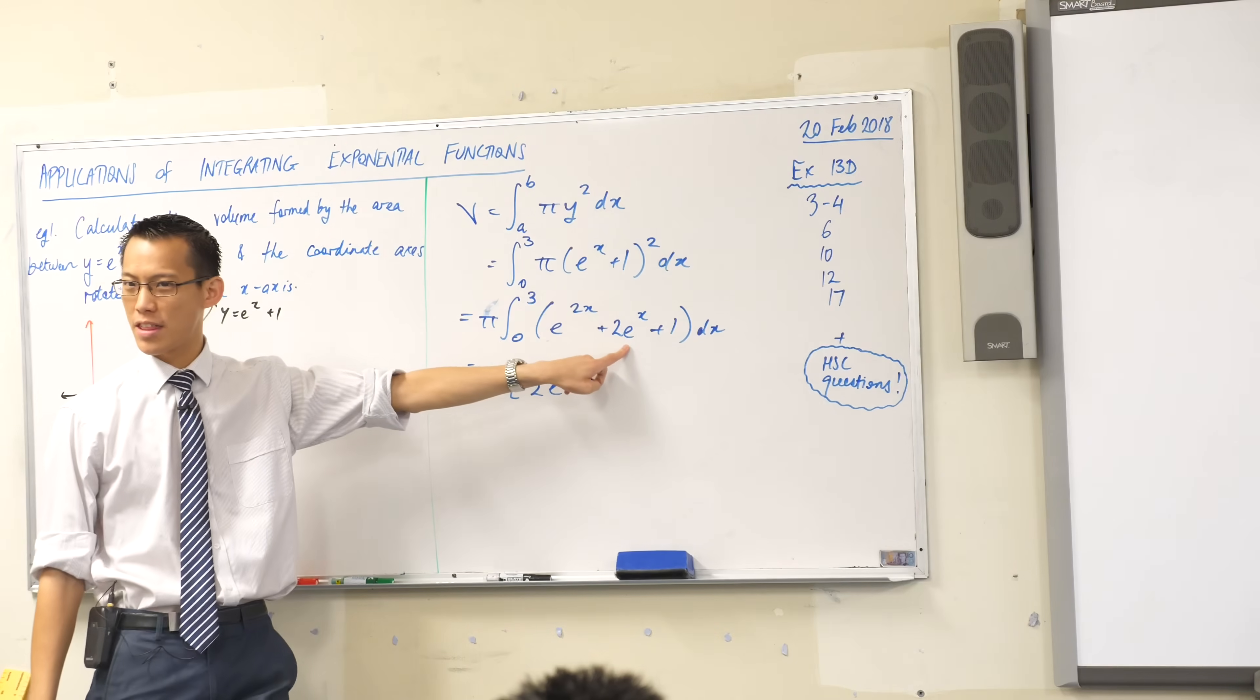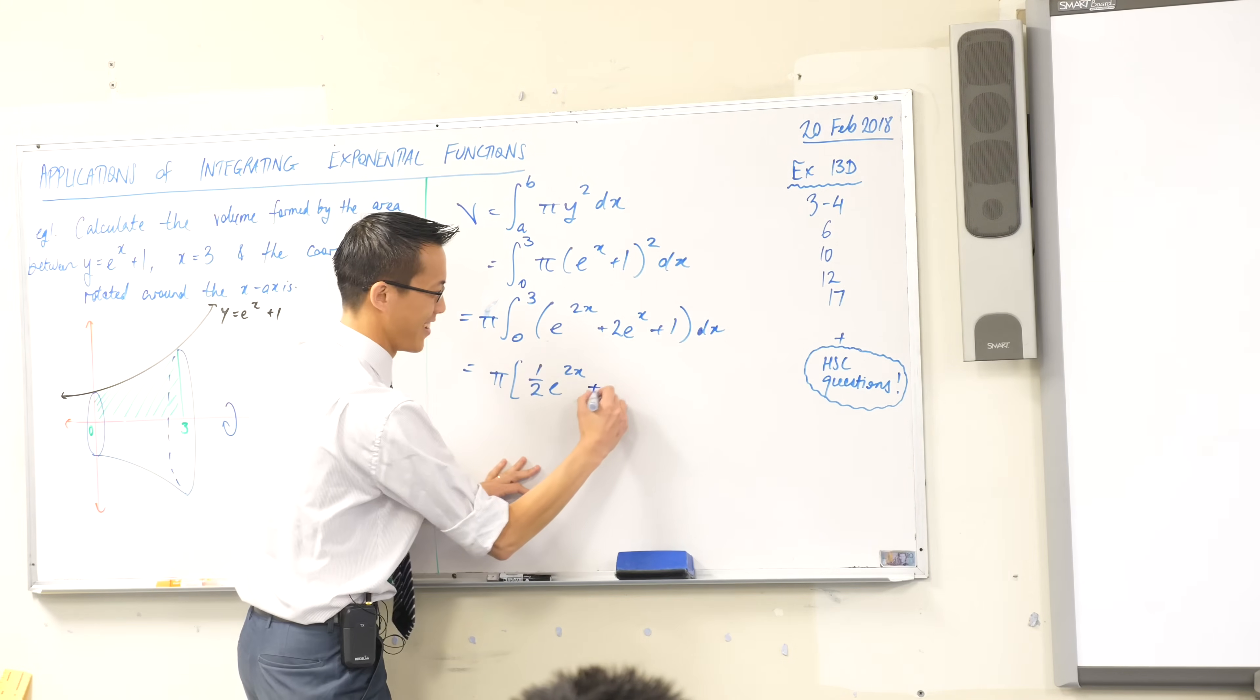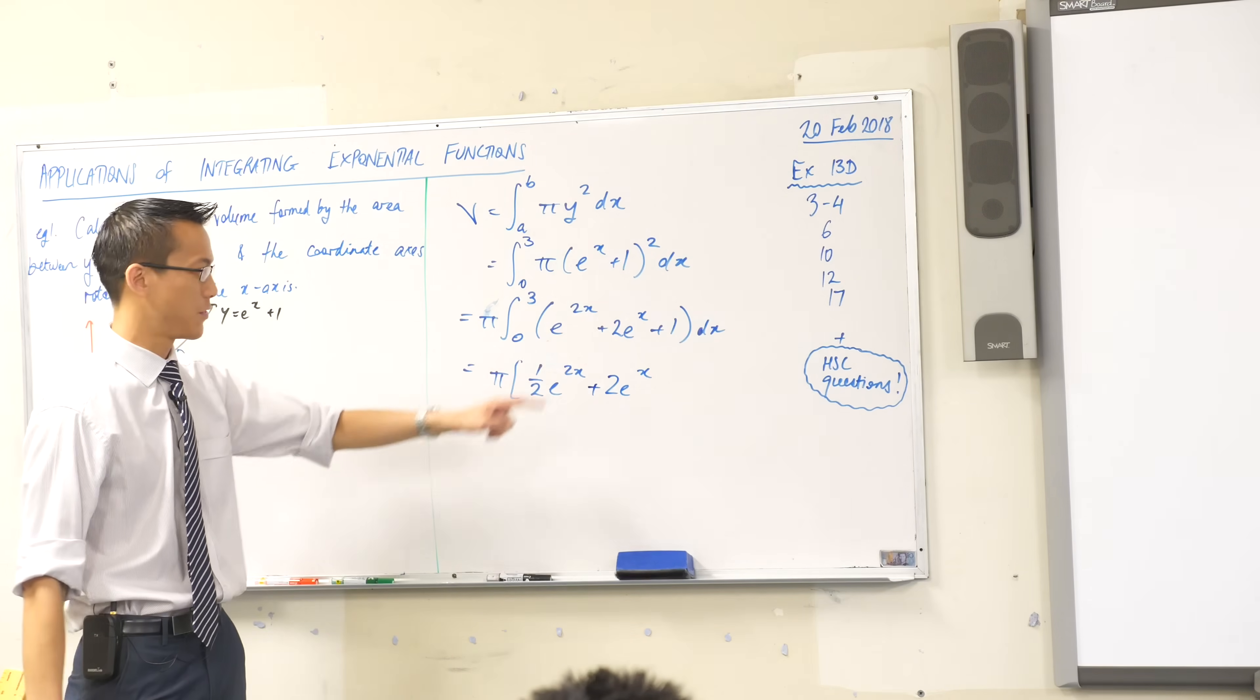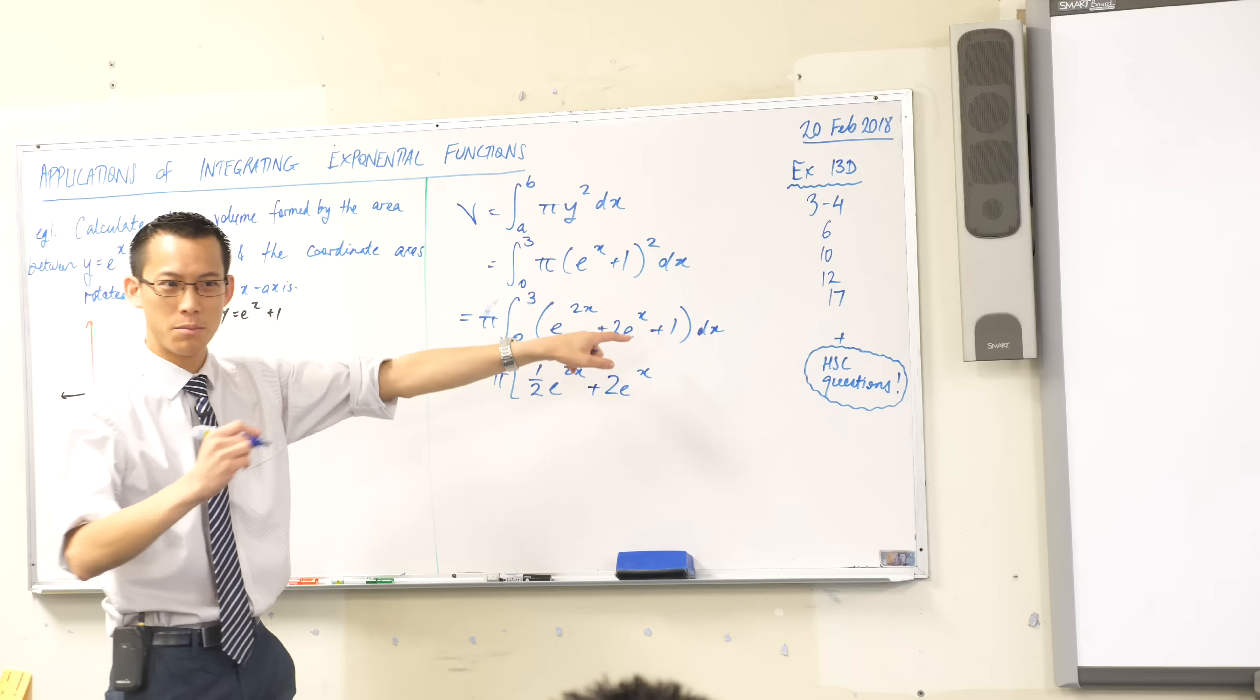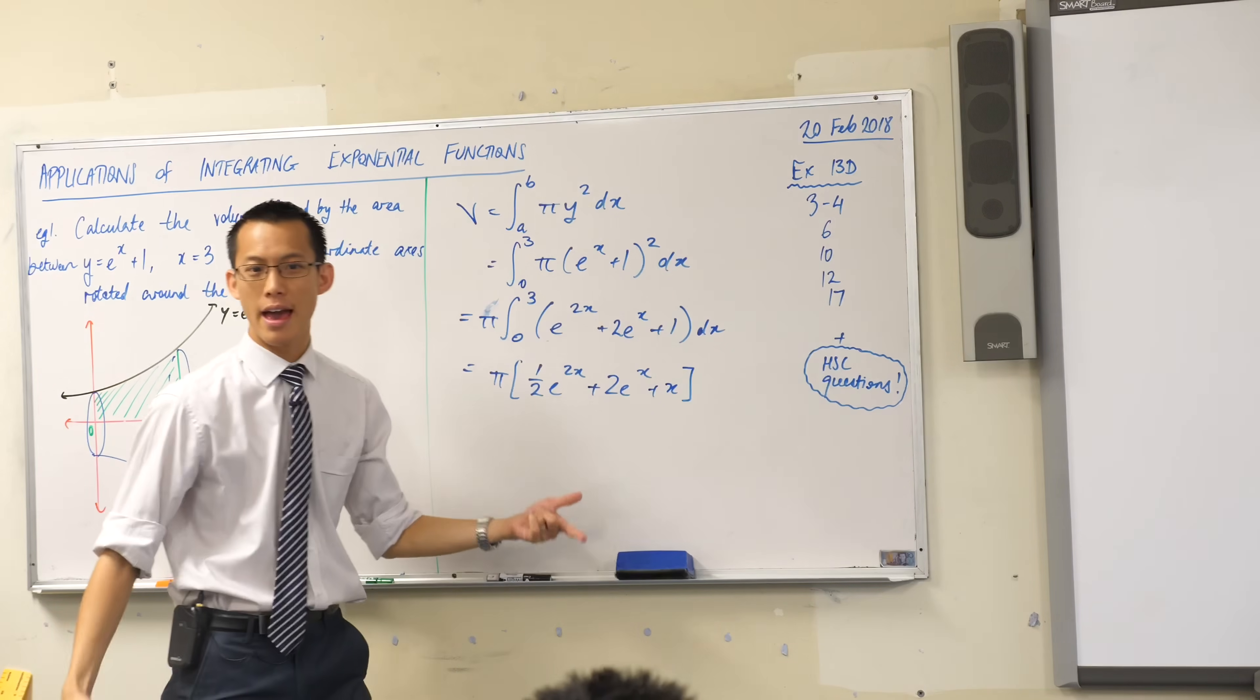This should be half e to the 2x. Just mentally check for yourself. If I differentiate this, will I return back? The answer is yes, your chain rule will cancel out that half. How about this guy? Can you find the primitive of 2e to the x? It's just 2e to the x. Last one, plus 1 becomes plus x. There we go, and I've got two boundaries.